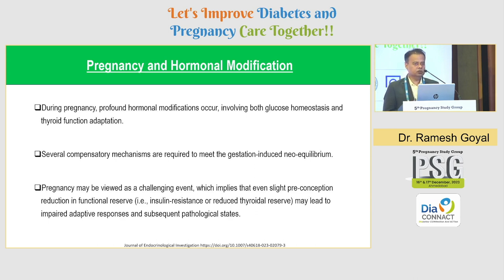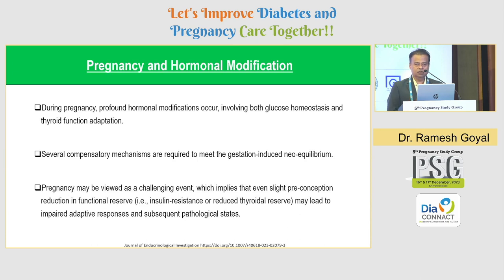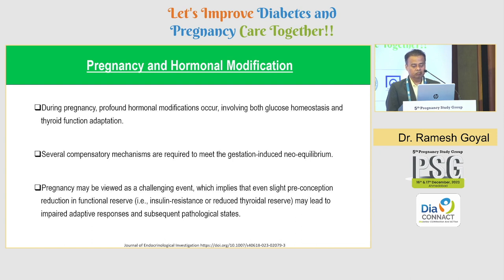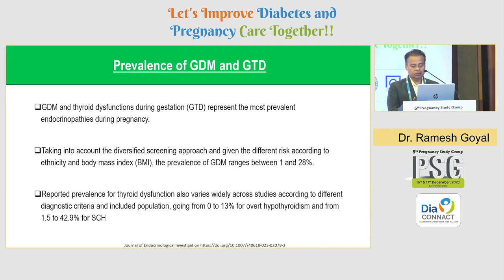There are certain physiological changes which occur in the body of a pregnant woman during pregnancy. Profound hormonal modifications occur involving both glucose homeostasis and thyroid function adaptation. Physiology affects the sugar pathway as well as the thyroid pathway, and most of the time the woman can successfully overcome these metabolic challenges. But at times, the body is not able to cope up with these demands and there is a manifestation of GDM or gestational thyroid problem. Several compensatory mechanisms are required to meet gestation, and even slight preconception reduction in functional reserve — that is insulin resistance — or reduced thyroid reserve may lead to impaired adaptive responses and subsequent pathological states.